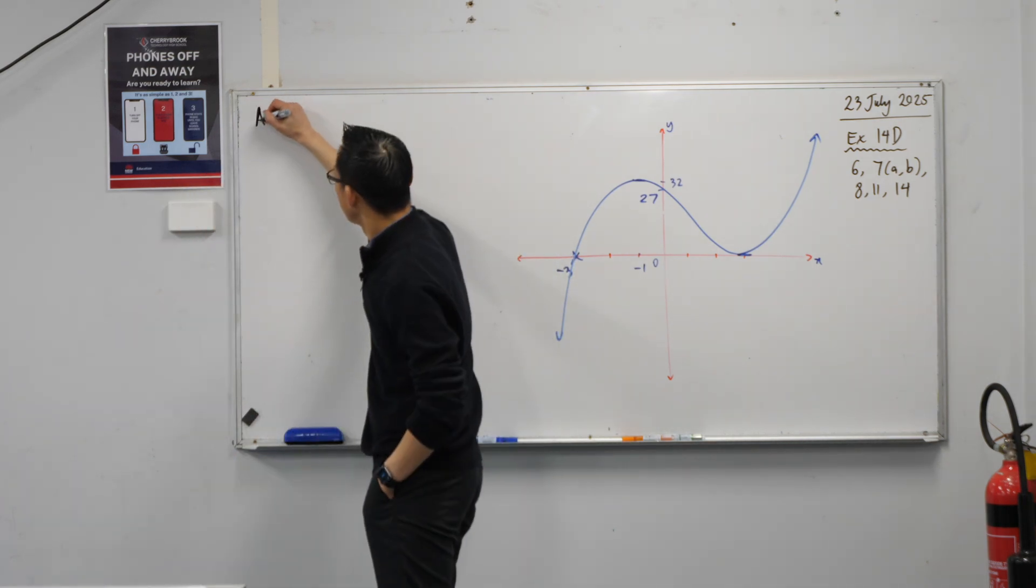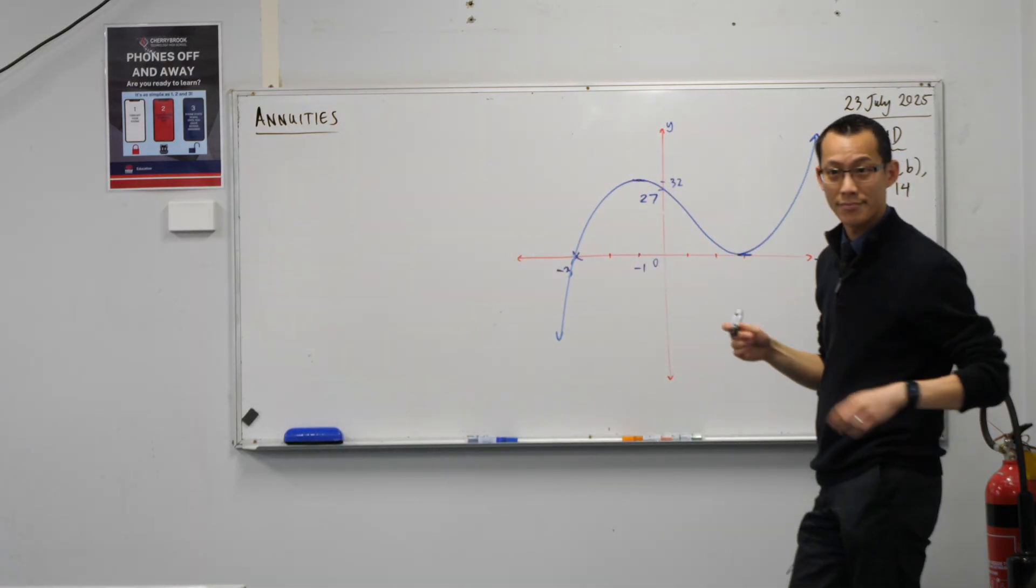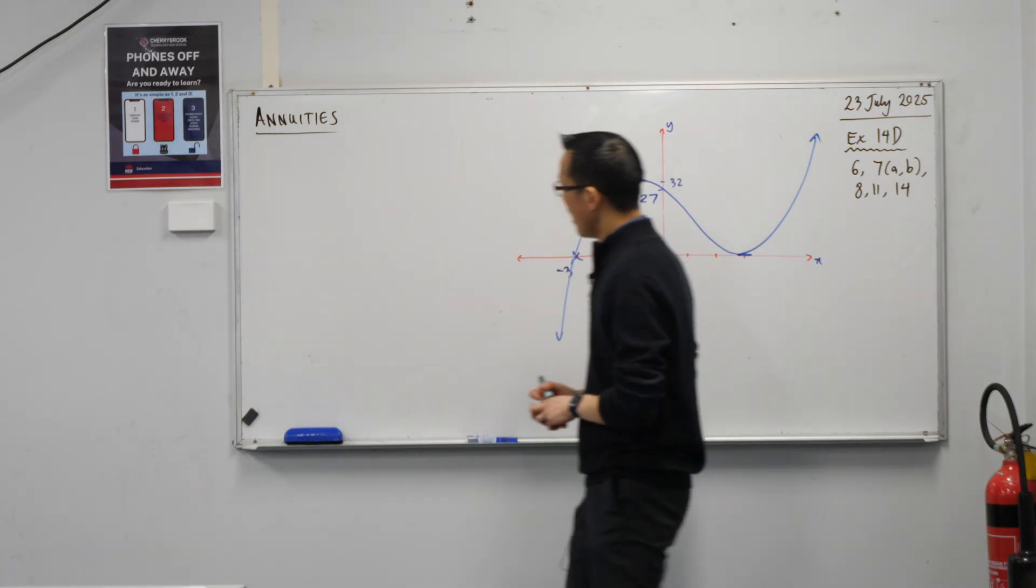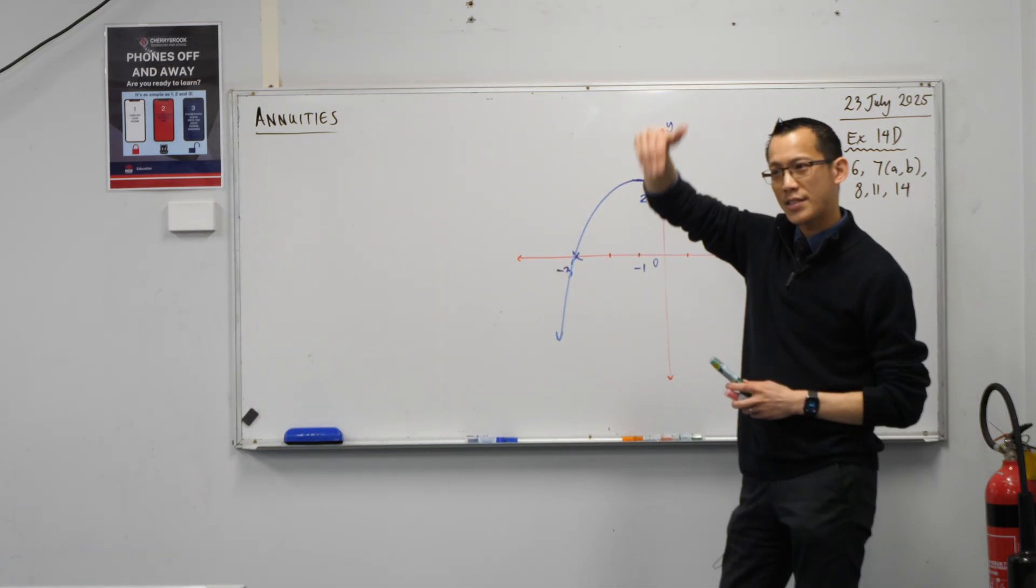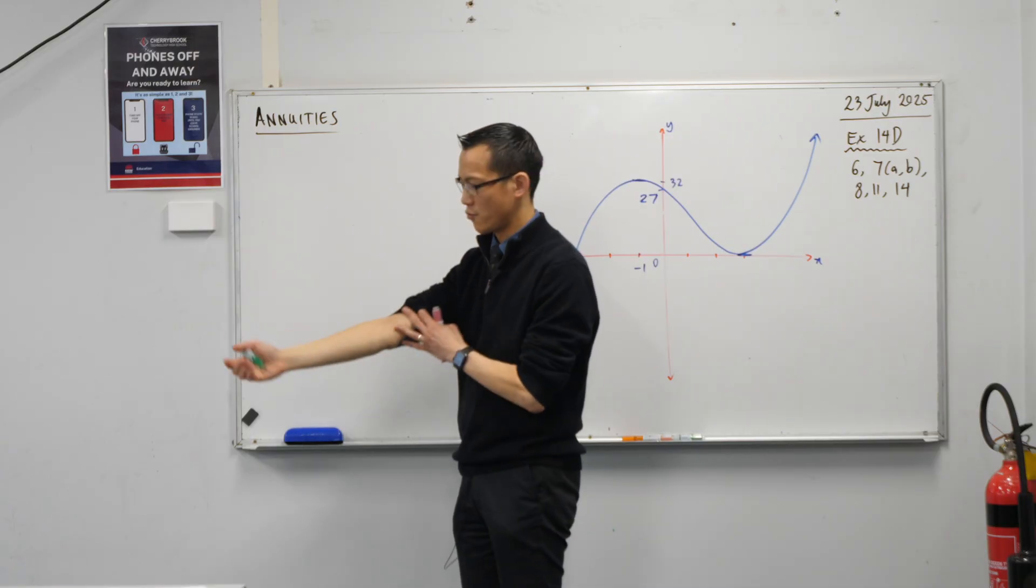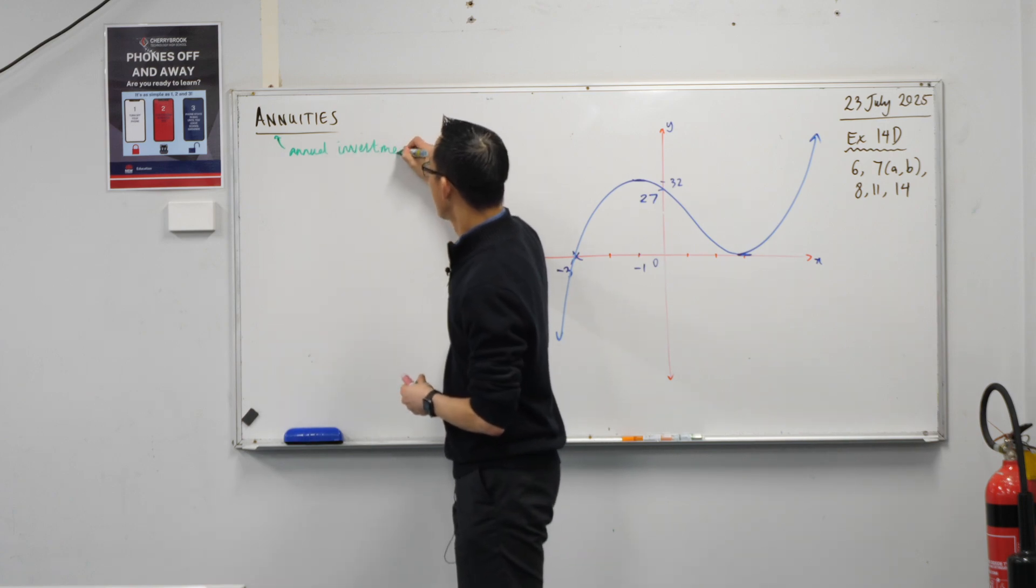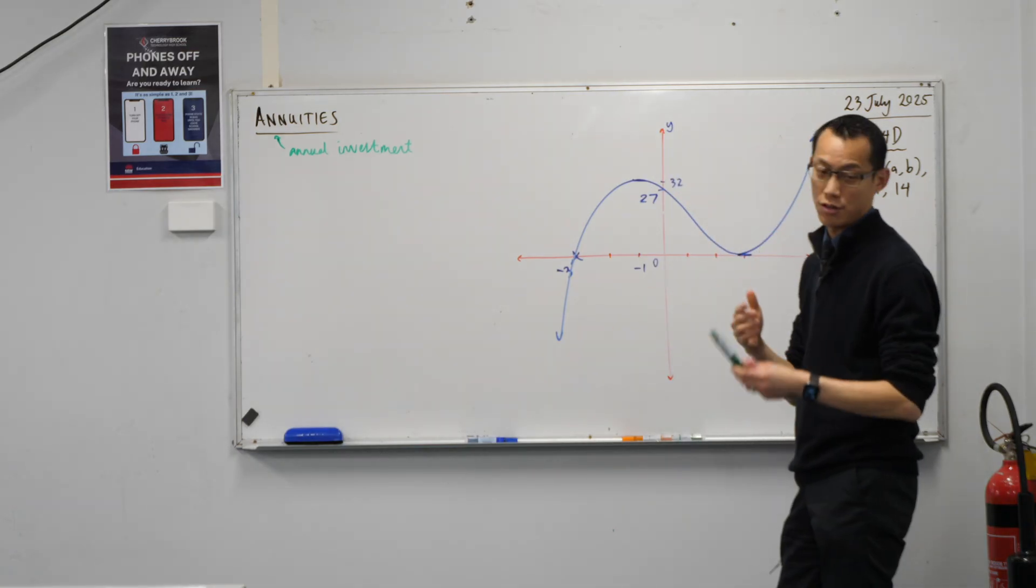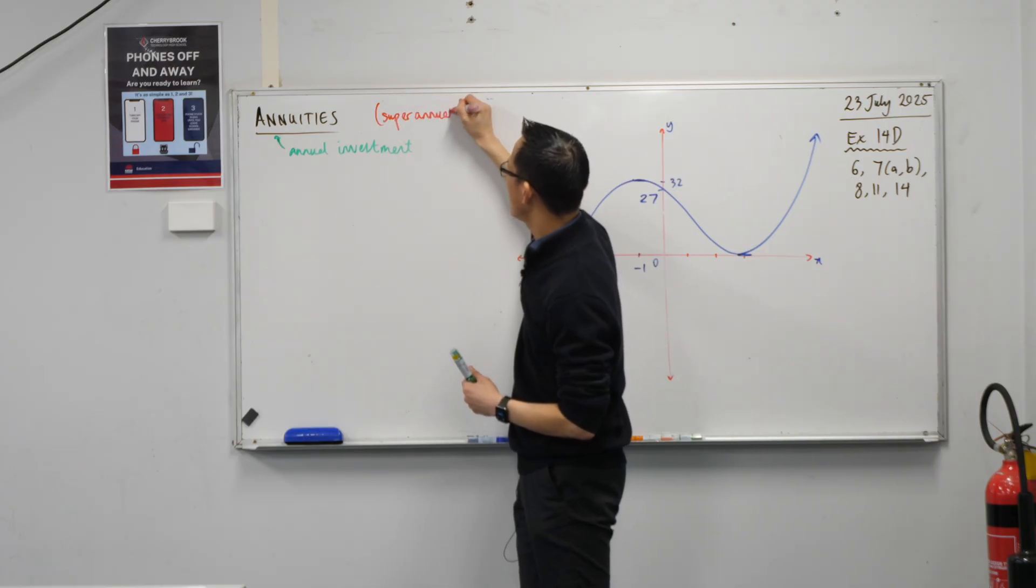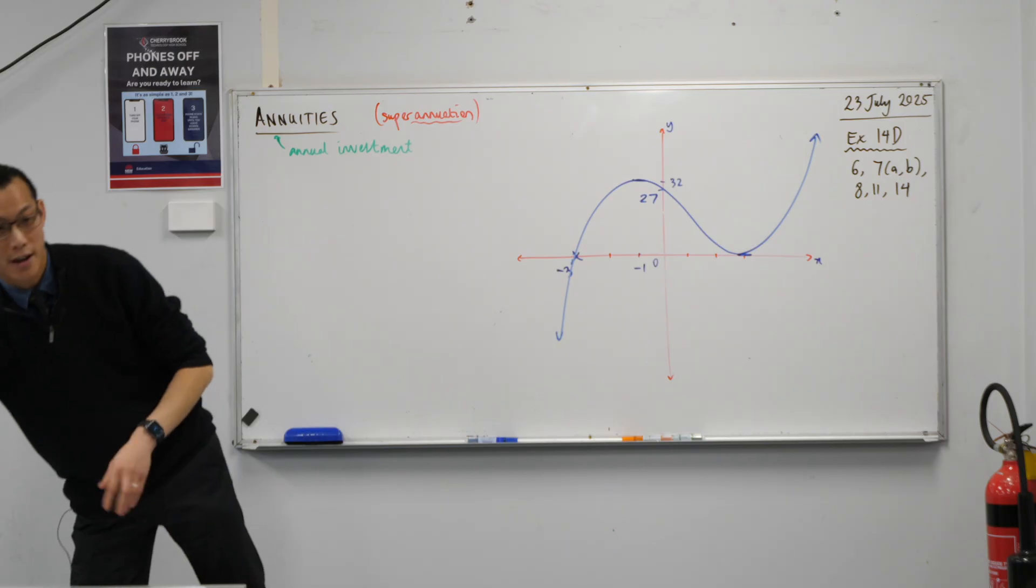Alright, so I said the heading was annuities. Does anyone know what an annuity is? An annuity is a situation in which you're investing money over and over again, and the usual time period is, can you guess from the name? Every year. So there's this idea of an annual investment.